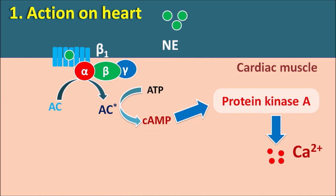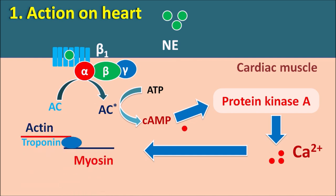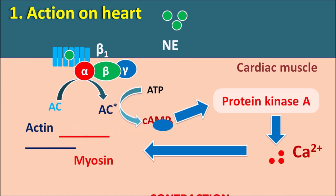By activation of beta-1 receptors, intracellular calcium levels increase and act on troponin, which normally forms a block between actin and myosin filaments. Calcium binds with troponin so that the calcium-troponin complex is removed from actin and myosin. These filaments can then slide on each other to produce contraction. In this way, norepinephrine produces contraction of the cardiac muscle by increasing cyclic AMP levels.